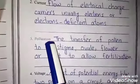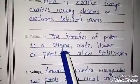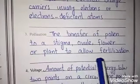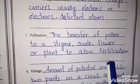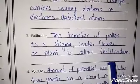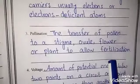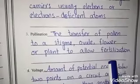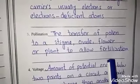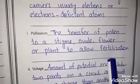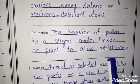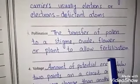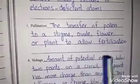Next is pollination: the transfer of pollen to a stigma or ovule of a flower to allow fertilization. Pollen is transferred from the stigma to the flower so that they can fertilize and new seeds and plants can grow.